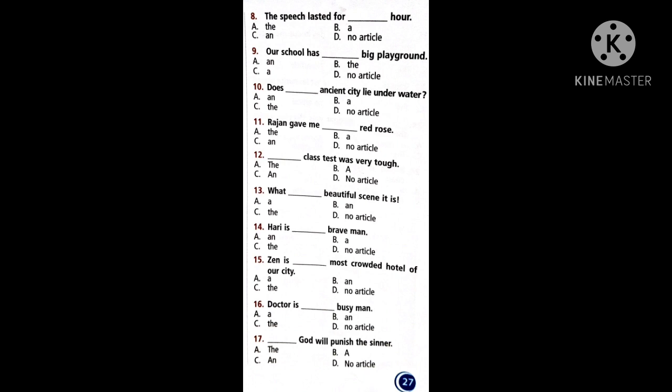Now question 9: Our school has dash big playground. So what option can we use here? Children, just go on reading from questions 10 to 17 on page number 27. You want to get a habit of reading. Just go on reading and find which answer suits, and try to use the correct article here.